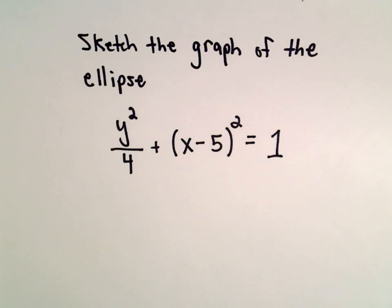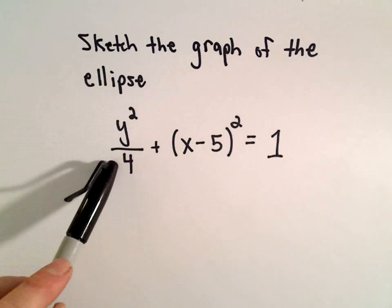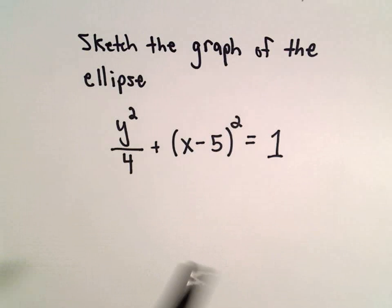Alright, in this example we're going to sketch the graph of the ellipse y squared over 4 plus x minus 5 squared equals 1.